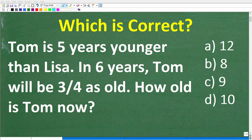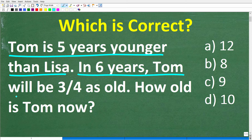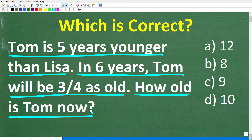Let's see if you can figure out how to solve this interesting math word problem about age. Tom is five years younger than Lisa. In six years, Tom will be three-fourths as old as Lisa. How old is Tom now?